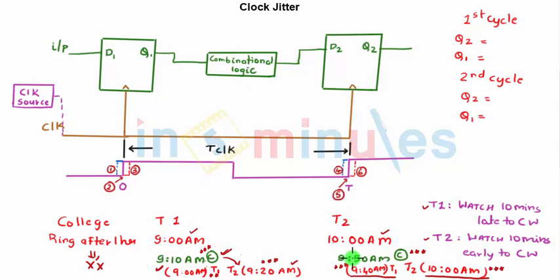Teacher two has entered the classroom and teacher one does not get the full one hour she needed to complete her syllabus. Comparing all watches: on the college watch she started at 9:10 and had to stop at 9:50 — only 40 minutes. On her own watch, 9:00 to 9:40 — again 40 minutes. On teacher two's watch, 9:20 to 10:00 — still only 40 minutes. Teacher one's watch was 10 minutes late and teacher two's was 10 minutes early, so the first teacher got only 40 minutes instead of one hour.